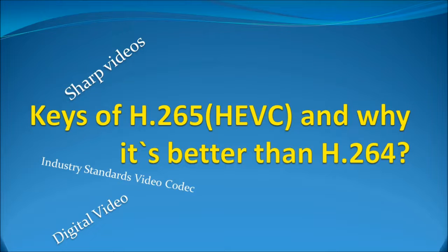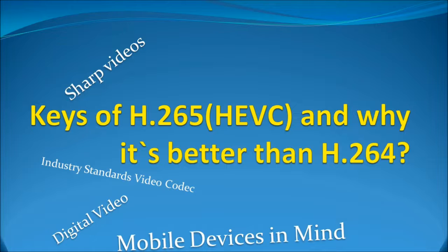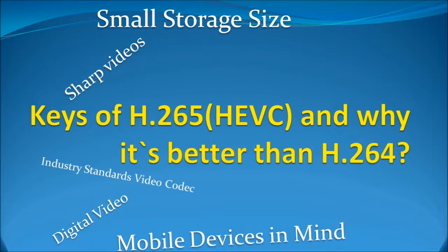H.265 video codec produces sharper videos than H.264 — basically as sharp as the original video — and brings better details on playback compared side by side with H.264. It is also focused on mobile devices and generates smaller file sizes compared to H.264 while generating about the same video quality, if not better.